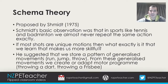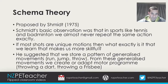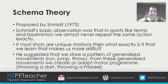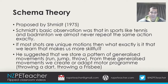He suggested that we store a pattern of generalized movements, such as a run, a jump, or a throw, and from these generalized movements we create or adapt motor programs — so throwing a dart or throwing a frisbee. If our generalized motor pattern is a throw, we can create a motor program for throwing a dart, a frisbee, a javelin, a dodgeball, and so on. All of these different types of throws are their own separate motor program, but initially we have a generalized motor program. The theory came about because the brain can't possibly store so much information for every single movement we need to make on the sports field.